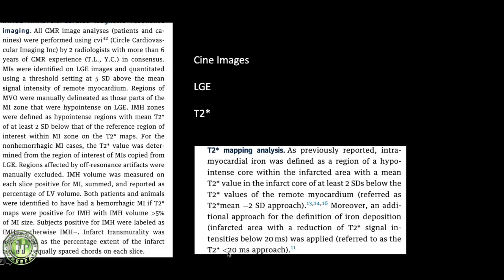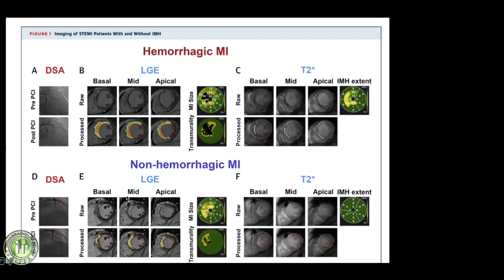Images were classified as hemorrhagic or non-hemorrhagic MI. All ST-segment elevated MI patients underwent angiography and post-PCI imaging. The dark areas seen on imaging represent microvascular obstruction within the infarct. Within those MVO areas, if T2-star values were less than 20 milliseconds, the patient was classified as having hemorrhagic myocardial infarction.